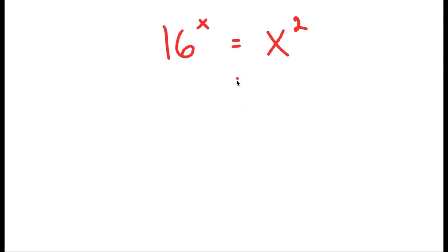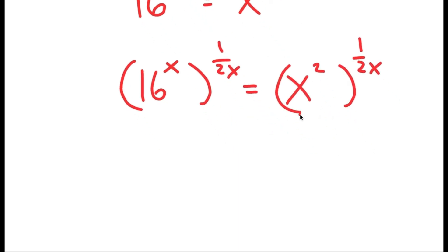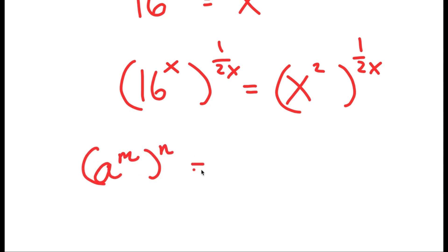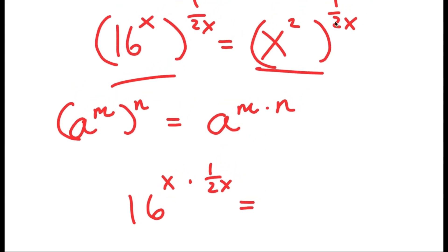I'm going to first start by taking the power of 1 over 2x on both sides. So I get 16 to the power of x to the power of 1 over 2x is equal to x to the power of 2 to the power of 1 over 2x. Using the property a to the power of m to the power of n equals a to the power of m times n, we can apply this to both terms: 16 to the power of x times 1 over 2x, and x to the power of 2 times 1 over 2x.